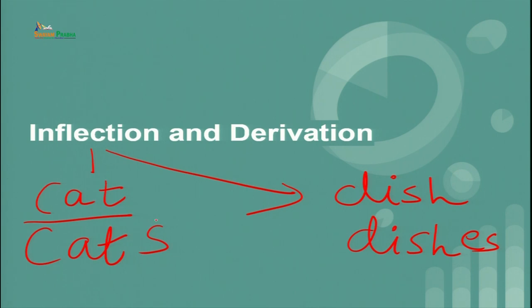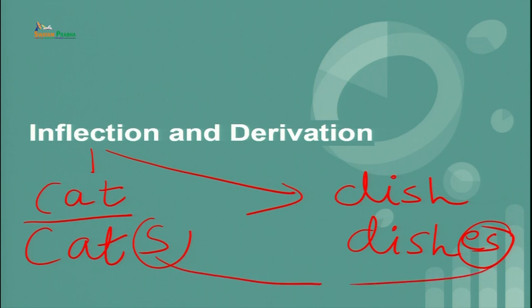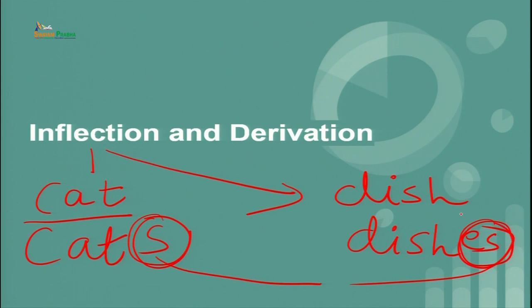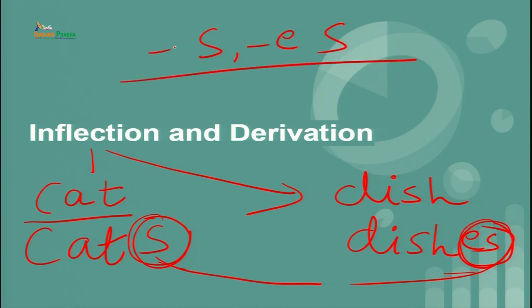Since I am talking about 's' and 'es' as plural markers, let me refer back to allomorphs. Both 's' and 'es' signify plural markers — they indicate that things are not singular but more than one. So 's' and 'es' are variants of the same plural marker meaning, and therefore you can say that they are allomorphs.